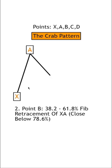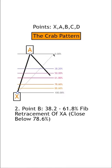The next step is to find point B, which needs a Fibonacci retracement that lands between 38.2 and 61.8, without closing past 78.6.